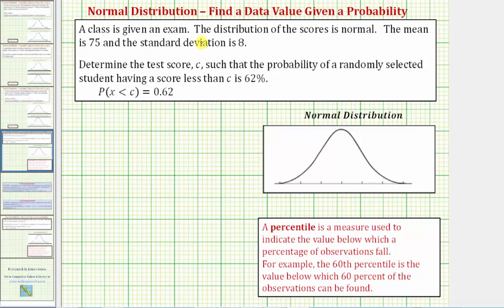A class is given an exam. The distribution of the scores is normal. The mean is 75 and the standard deviation is 8. So the mean, or μ, equals 75 and the standard deviation, or σ, is equal to 8.